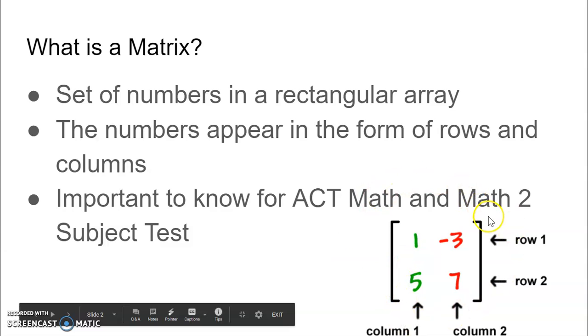And these numbers can appear in the form of rows and columns. So here in this matrix, for example, we have a rectangular array that has two rows and two columns, which contain values.